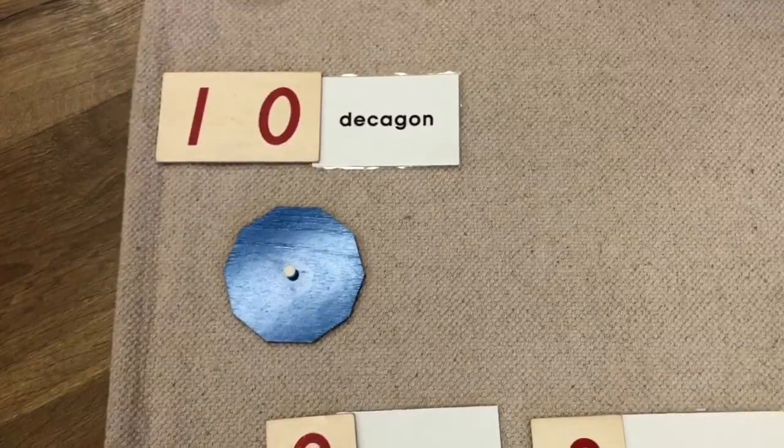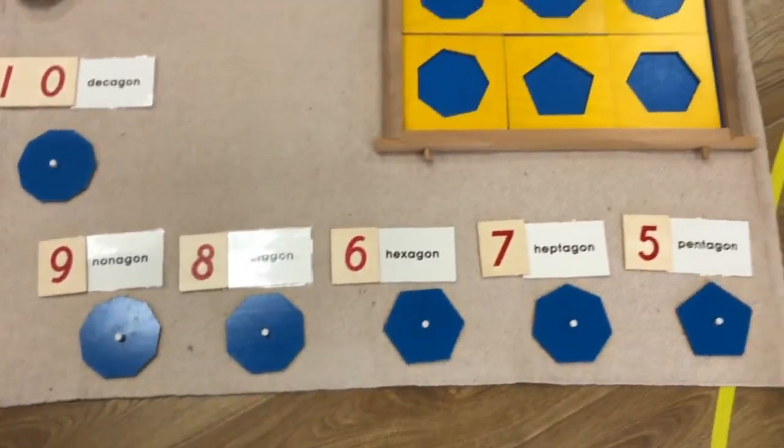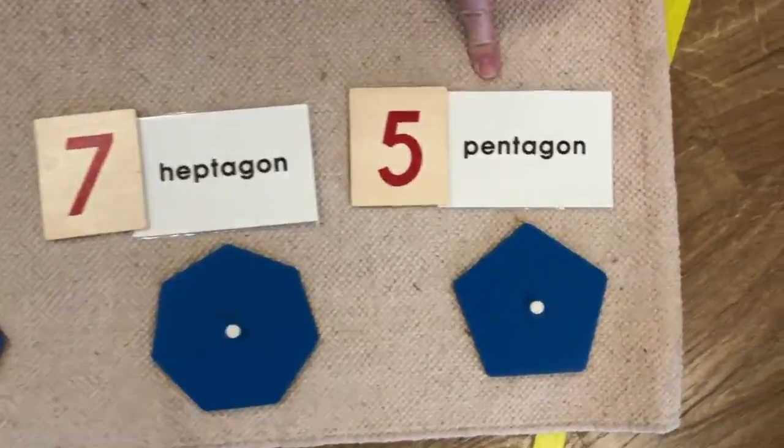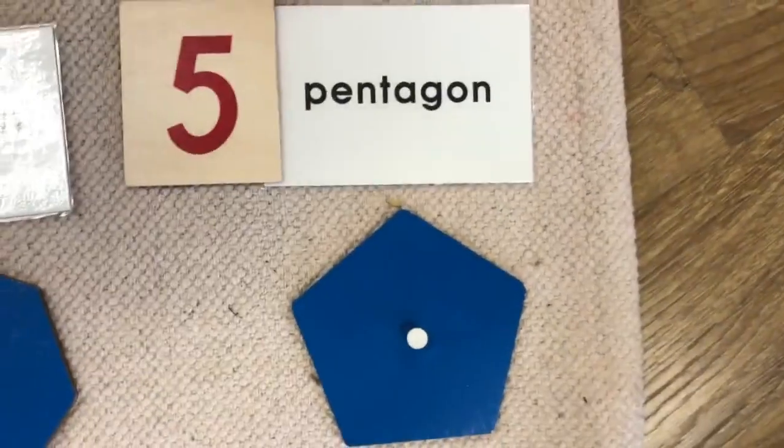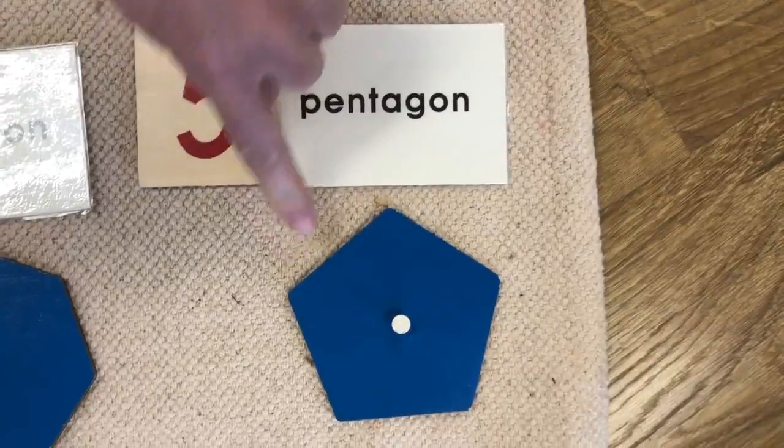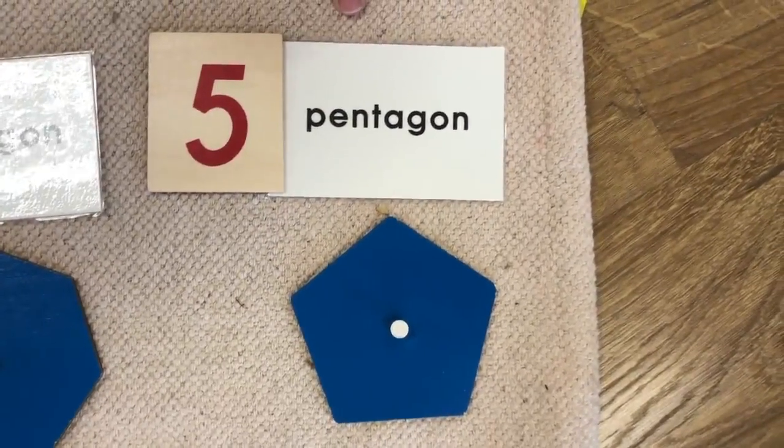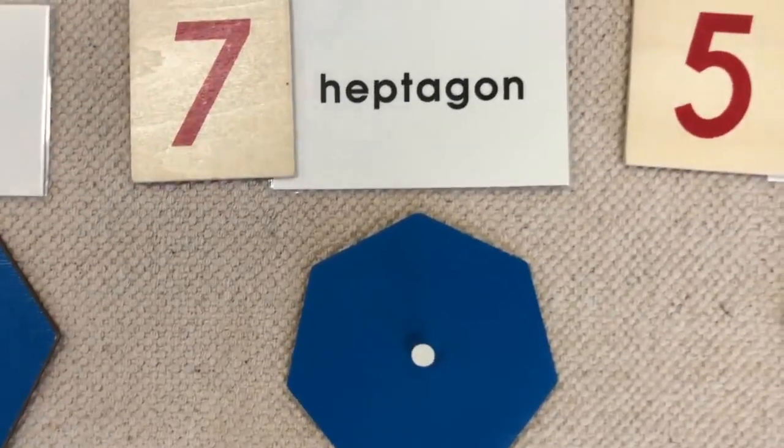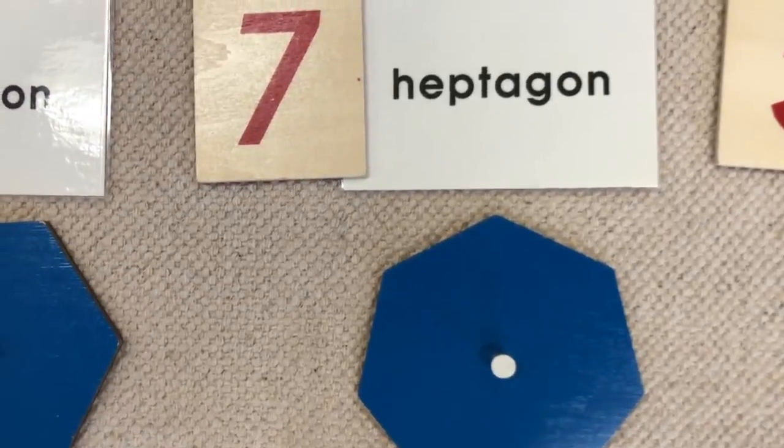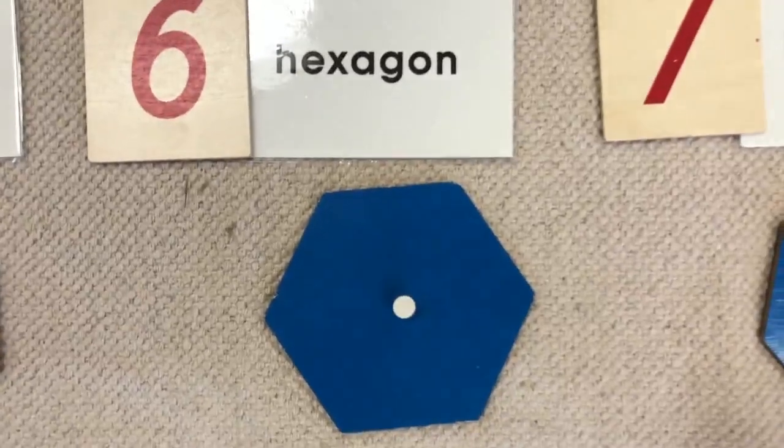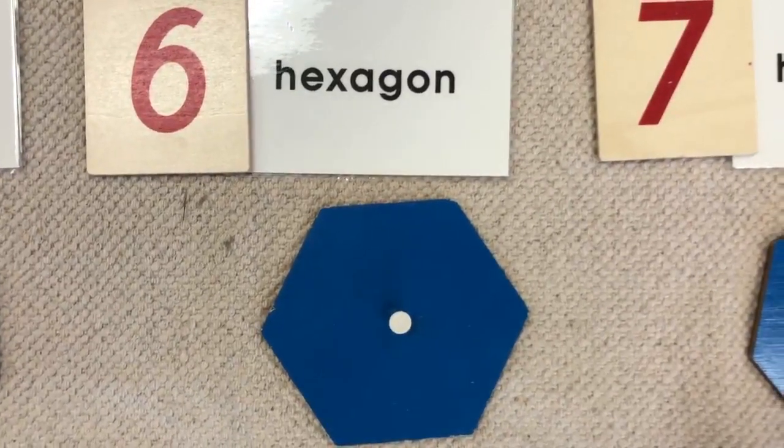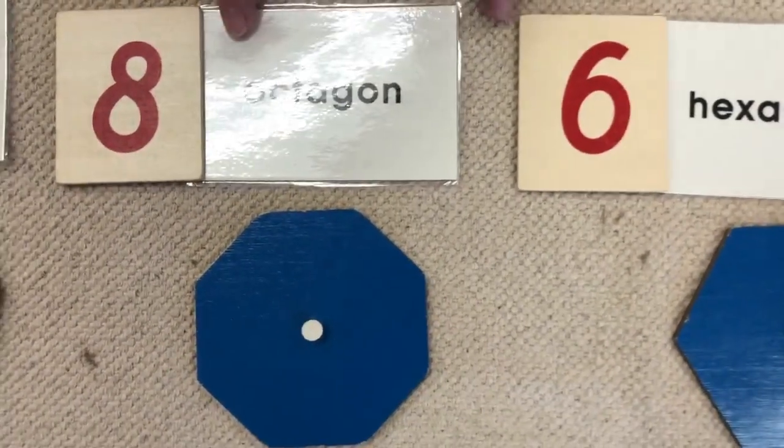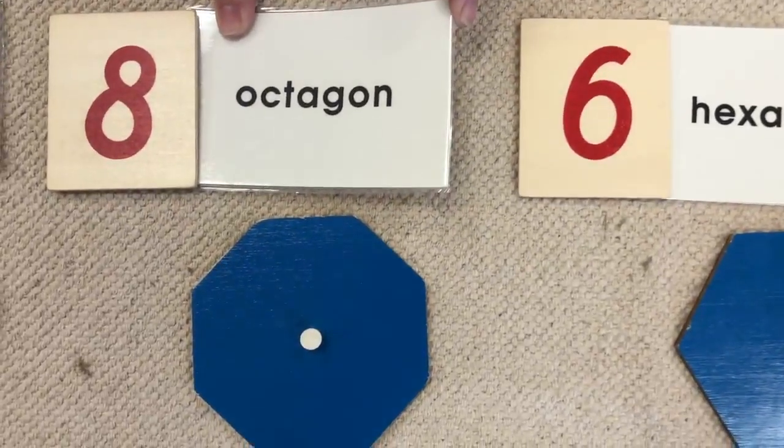And now let's review our polygons. A five-sided polygon is called a pentagon. Pentagon. There's a very famous building in our nation's capital of Washington, D.C. that's shaped like a pentagon, and they call it the pentagon. A seven-sided polygon is called a heptagon. A six-sided polygon is called a hexagon. Hexagon. An eight-sided polygon is called an octagon. Octagon.